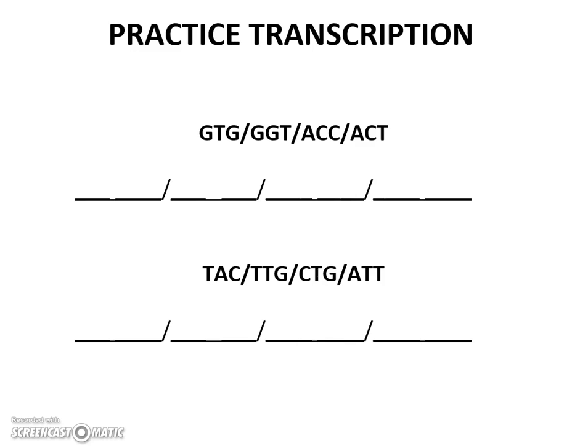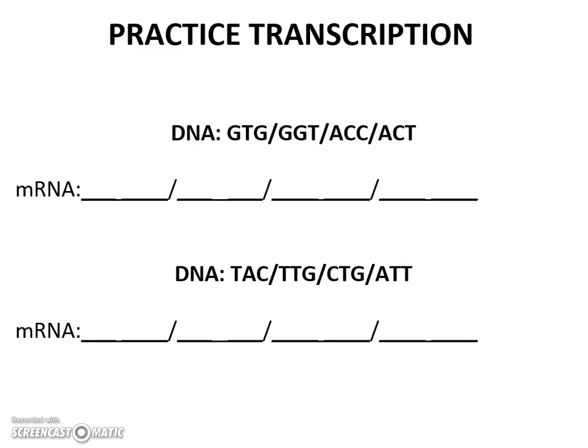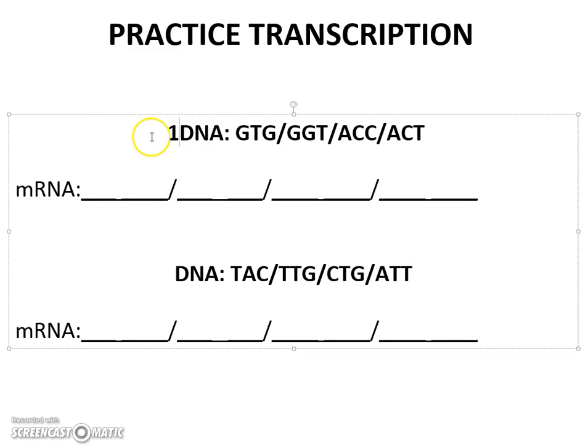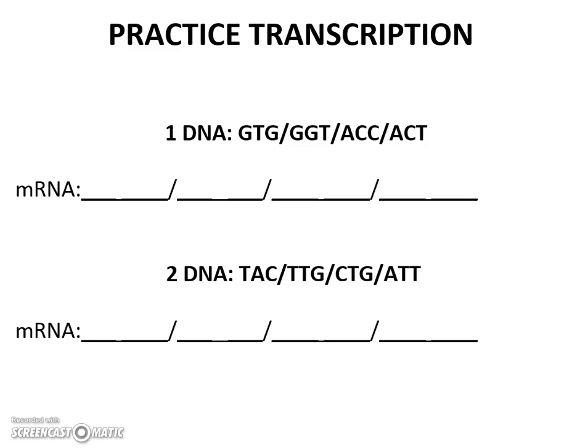Let's practice. Remember the code: apples go under trees — A with U, U with A. Think about cars and garages — garages hold cars — C and G, G and C. If I give you a four three-letter sequence, those are called codons. GTG is our first codon. Take the GTG and write down the complementary base pair for RNA — remember you can't use any T's. Copy down the first DNA sequence and write the mRNA that would be correctly matched. Do the same for the second DNA strand. Pause the video here until you have written down what you think would pair. Remember G and C, A and U.